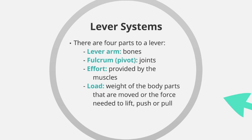The lever arm is typically formed by the bones in the body. For example in the arm the lever arm could be the radius and ulna, or in the leg it could be the tibia and fibula. The fulcrum or pivot is represented by the joints of the body — the elbow, the knee, the hip, the shoulder — these are the points at which movement takes place.